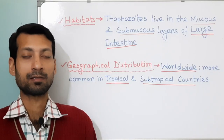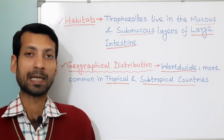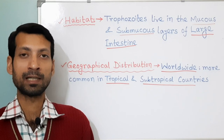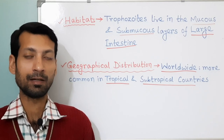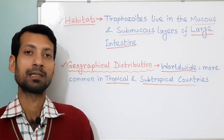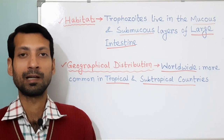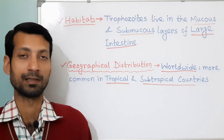Habitat: Trophozoites of Entamoeba histolytica live in the mucus and submucus layers of the large intestine.